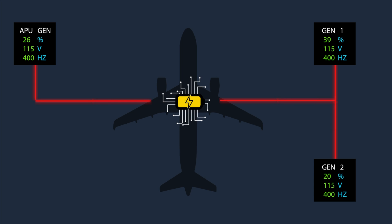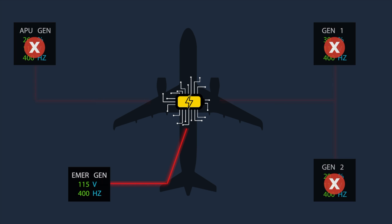Each of the two engine-driven generators, or the APU generator, is capable of supplying the entire aircraft network. If all three main generators fail, the emergency generator can supply part of the AC and DC systems.